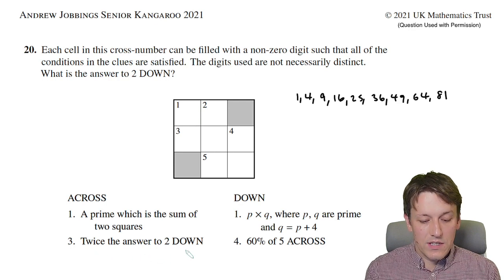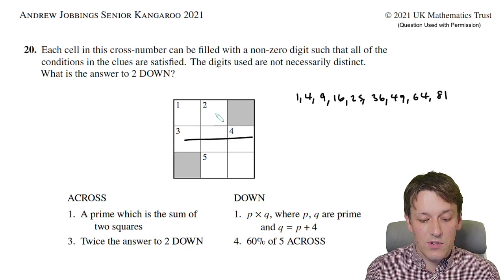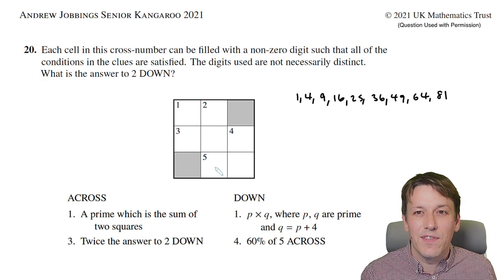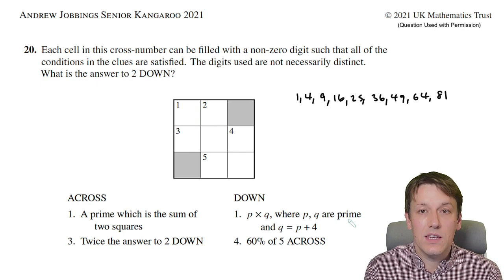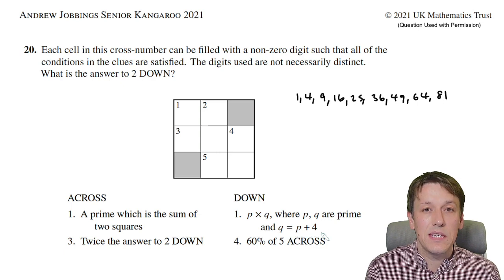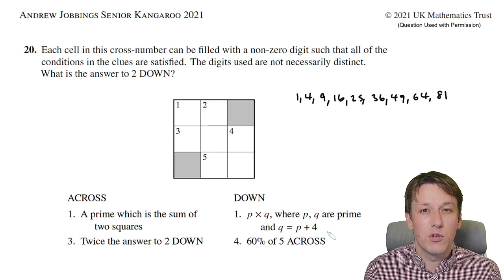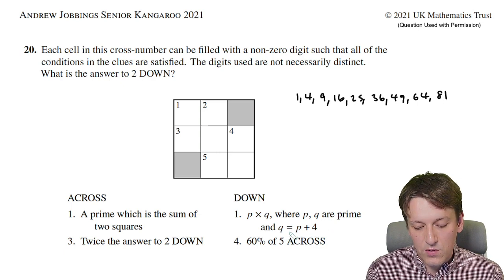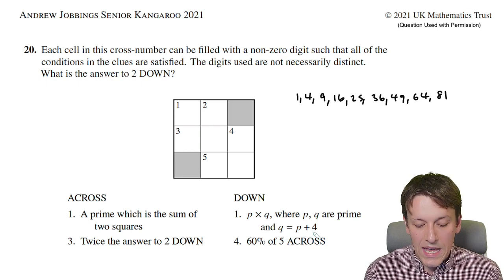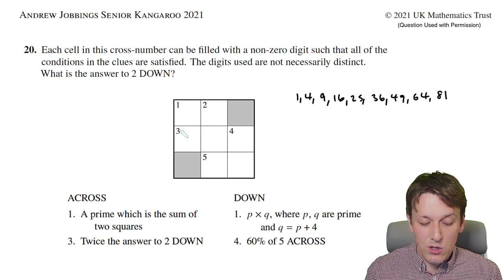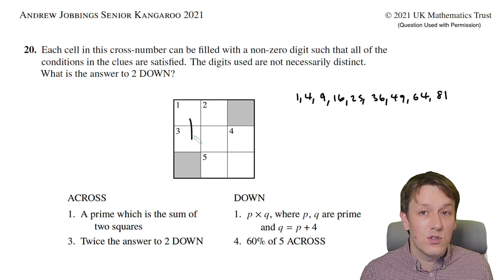Three across is twice the answer to two down, so this number is going to be double this number—very hard to start with that one. One down is p times q where p and q are prime and q equals p plus 4. That looks more promising, so we need the product of two prime numbers that are four apart, and the result is still only a two-digit number, so we can't use two big primes.